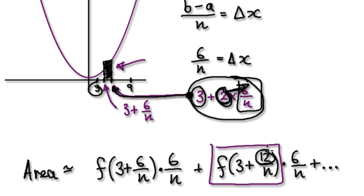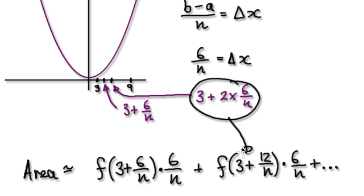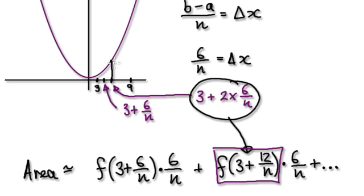2 times 6 over n up here would be 12 over n. So we would then put this number into the original function. This whole thing here would then give us the height of this rectangle here. And then we need to times it with delta x, so that would then give us this area here.